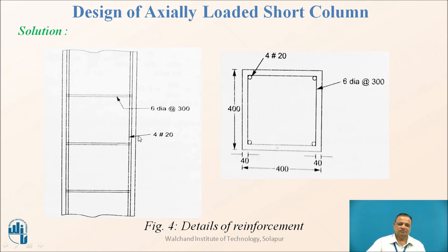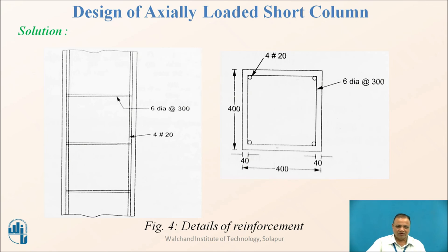Figure 4 shows the sectional elevation and plan, with 4 bars provided at the corners and 6 mm diameter lateral ties at 300 mm spacing. The key difference between the two examples: in the first, the gross area was calculated; in the second, the column dimensions were given, and we checked whether the required gross area was less or more than the provided area before deciding on longitudinal steel.